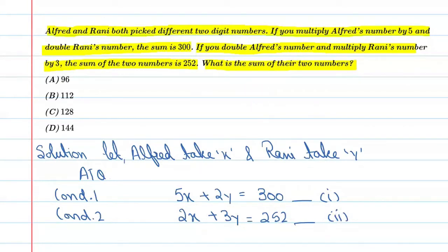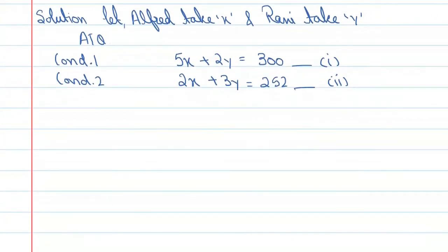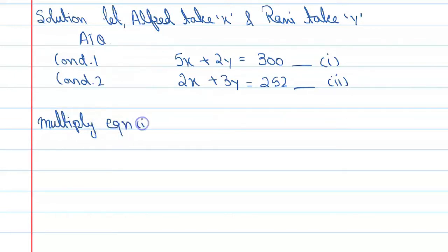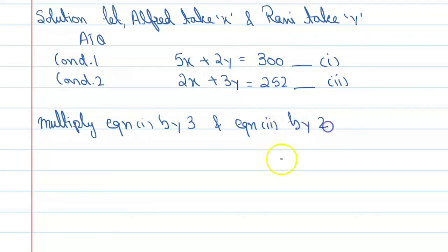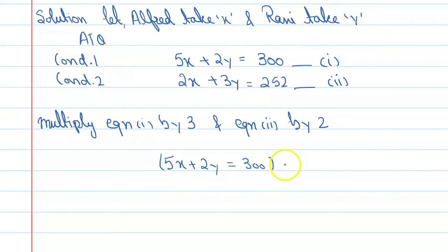Now we will solve these two equations by the elimination method. Multiply equation 1 by 3 and equation 2 by 2. When you multiply equation 1 by 3, you can write it as our first equation multiplied by 3.